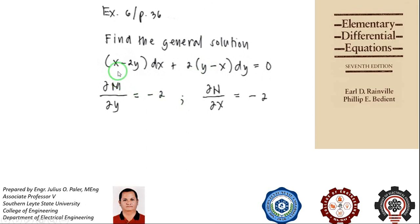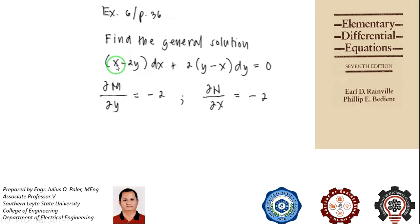Our M is x minus 2y. If we get the partial derivative of this with respect to y, x is a constant, so that term becomes zero, and the partial derivative of minus 2y with respect to y is negative 2.